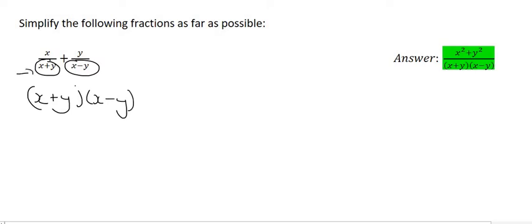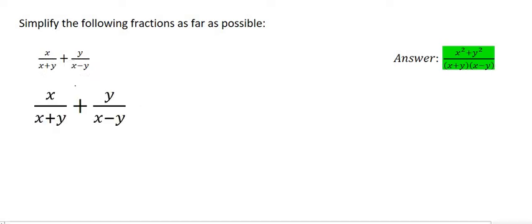What is this part missing from its common denominator? Well, it still needs (x-y). And what is this part still missing? It's missing (x+y). So if we enlarge this, we know that this part still needs to be multiplied with (x-y). And what you do at the bottom, you must do at the top. And then this part still needs to be multiplied with (x+y). And what you do to the bottom, you must do to the top.